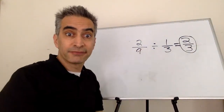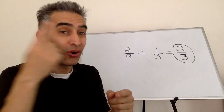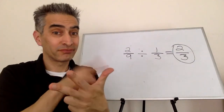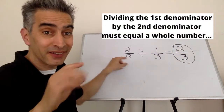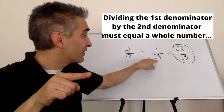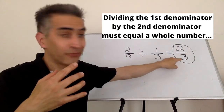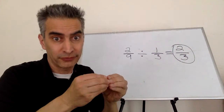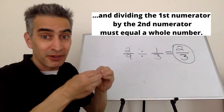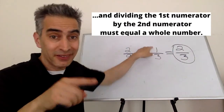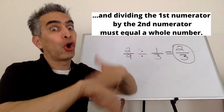And we're finished. Unfortunately, we can't always use this first way, because this number here divided by this number here must equal a whole number. At the same time, this number here on the top divided by this number here on the top has got to equal a whole number.